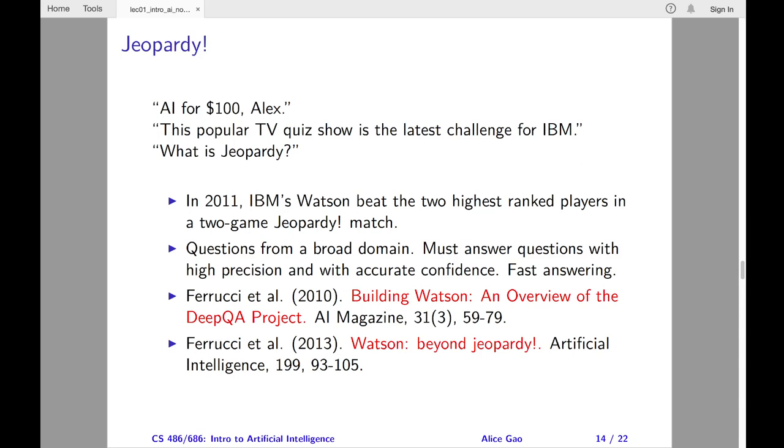In 2007, IBM research took on the grand challenge of building a computer system that can perform well on open domain question answering. Specifically, a system that can win the game of Jeopardy. In 2011, a system called Watson beat the greatest players of all time, Ken Jennings and Brad Rutter in the two-game Jeopardy match.